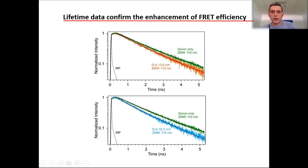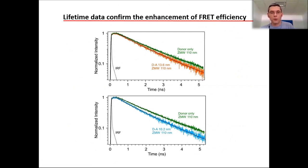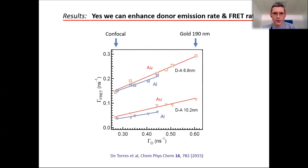We can also observe the signature of FRET in the fluorescence lifetime: in the presence of the acceptor, the donor lifetime is shortened because the FRET rate creates a new decay pathway. This rules out radiative transfer as the mechanism. We can plot the FRET rate versus the inverse of the donor lifetime — the total donor decay rate — and we observe a linear relationship. So in the case of nanoholes, there is a linear relationship between LDOS and FRET rate, though this is not a general relationship.